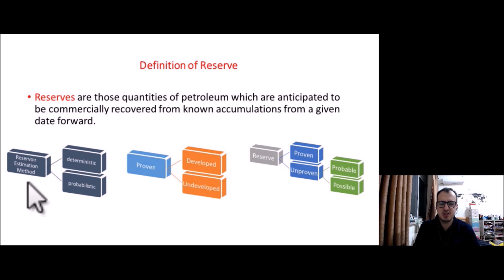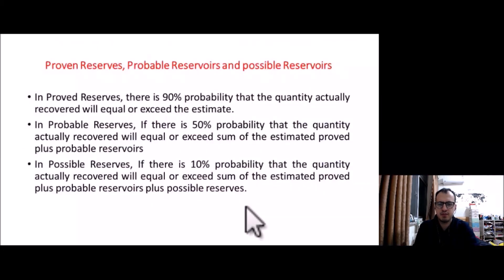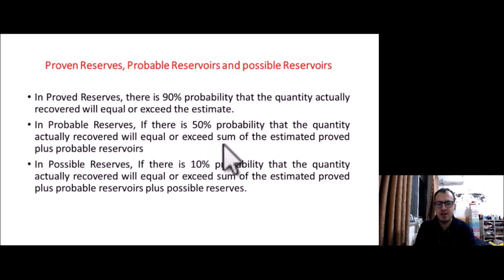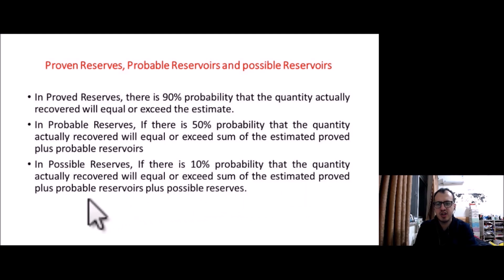There are three important definitions. In proved reserves, there is a 90% probability that the quantity actually recovered will equal or exceed the estimates. In probable reserves, there is a 50% probability that the quantity actually recovered will equal or exceed the sum of the estimated proved plus probable reserves. In possible reserves, there is a 10% probability that the quantity actually recovered will equal or exceed the sum of the estimated proved plus probable plus possible reserves.